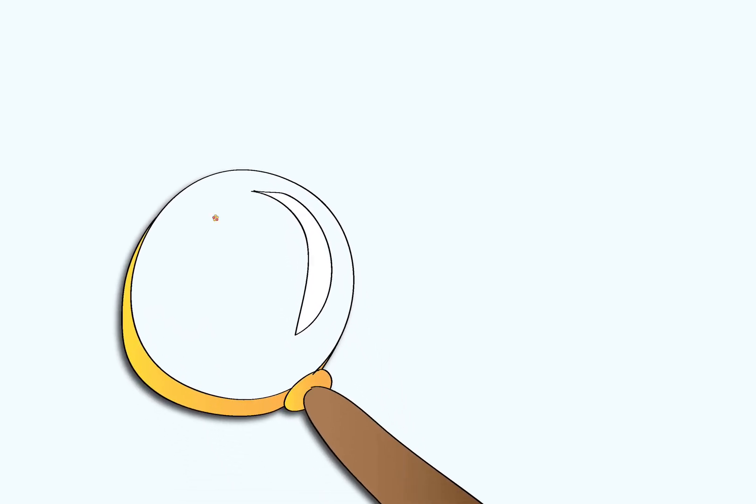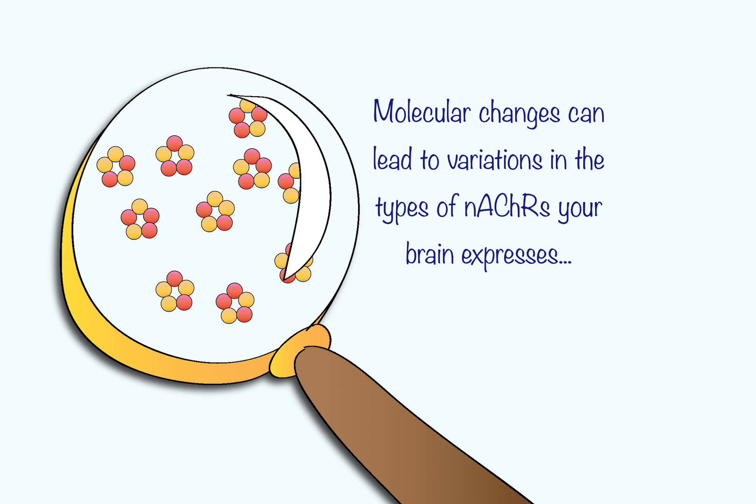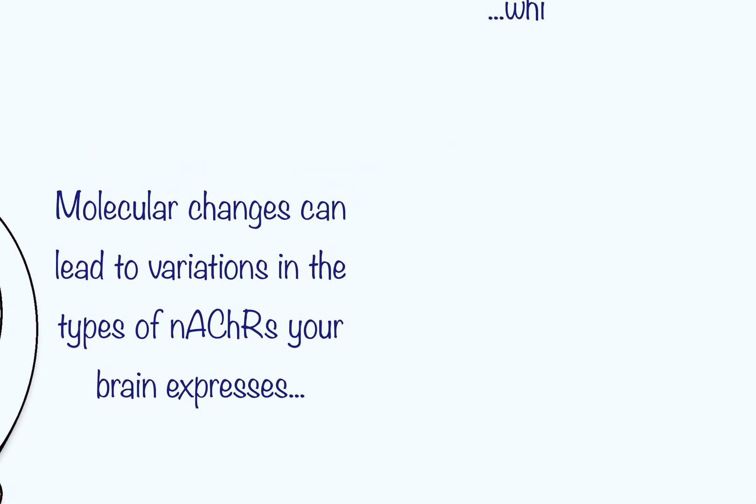These are noticeable effects, but what you don't know is that changes also happen on the molecular level that can lead to specific variations in the type of nicotinic acetylcholine receptors your brain expresses. And these differences may lead to protection from certain neurodegenerative diseases.